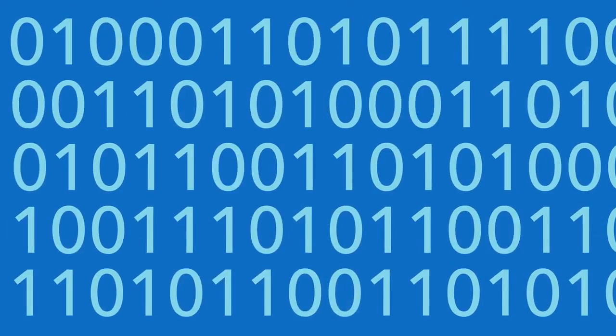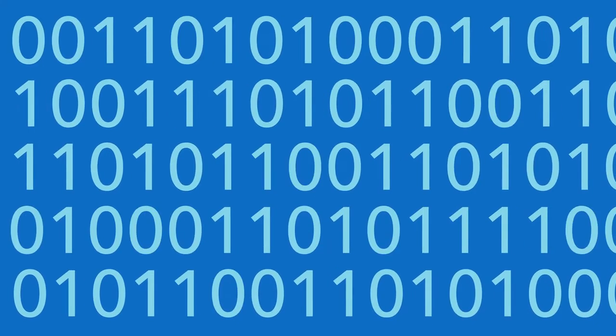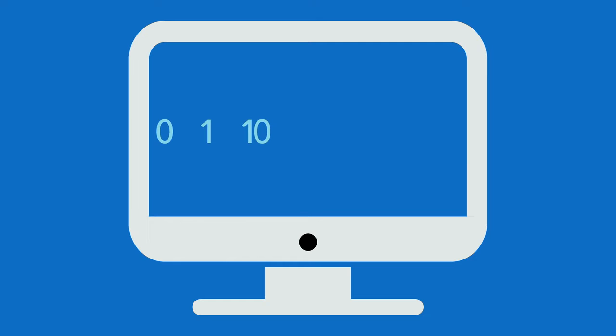Memory, at its most basic form, consists of ones and zeros. A simple example is how a computer counts to 5: 0, 1, 10, 11, 100, 101.